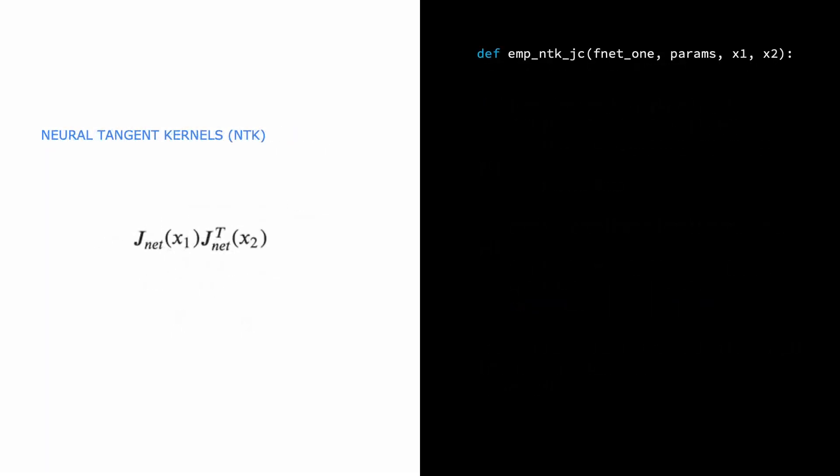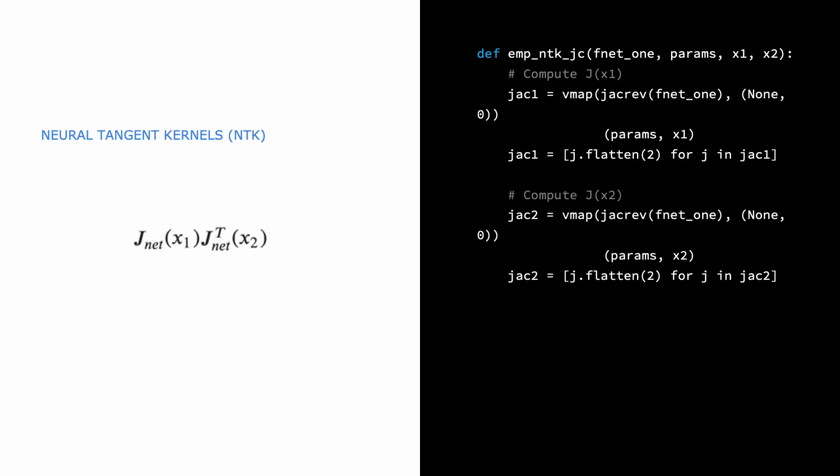Another final example that benefits from FuncTorch is neural tangent kernels. These are used to describe how a neural net trains and have become popular in studying networks that are hard to describe traditionally, such as networks with large layer widths. This example describes an empirical neural tangent kernel using a Jacobian contraction. For two data points, this is defined as the matrix product between the two Jacobians of the model at the points.